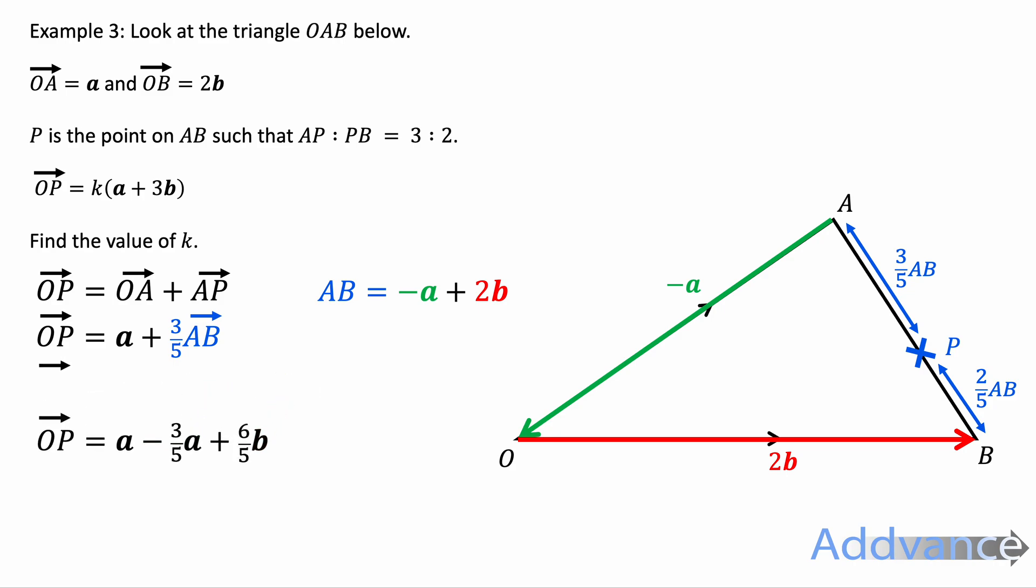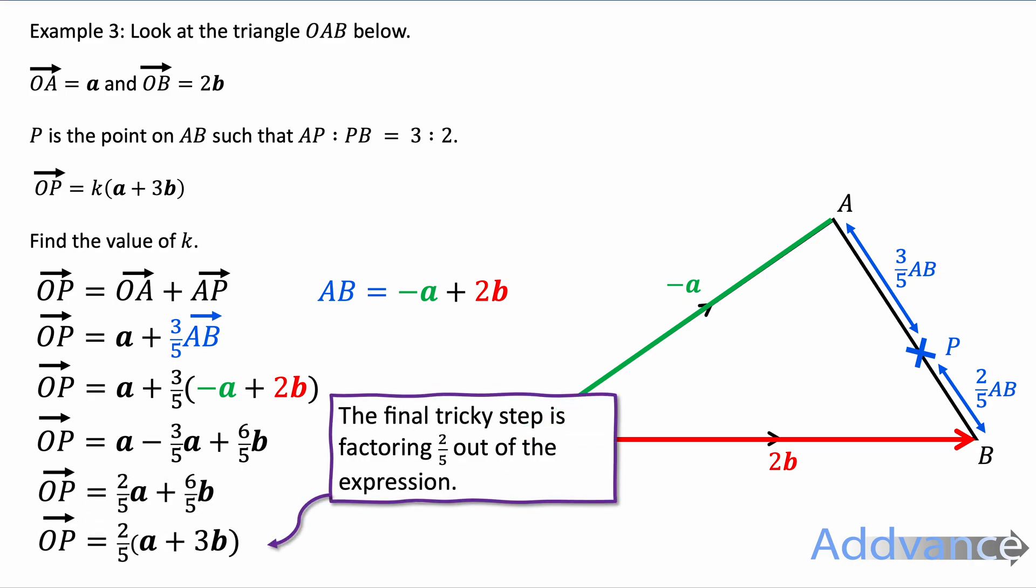So AB has been replaced with minus a plus 2b. We expand those brackets, and we get a minus 3 fifths a plus 6 fifths b. Just remember 3 fifths times 2b will be 6 fifths b. Simplify that: a minus 3 fifths a will be 2 fifths a. That's one whole minus 3 fifths, which will be 2 fifths.